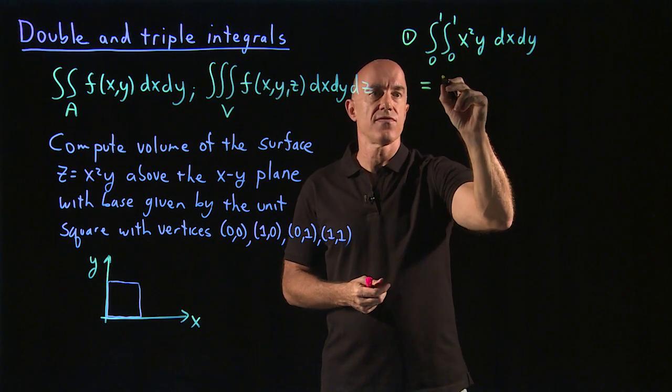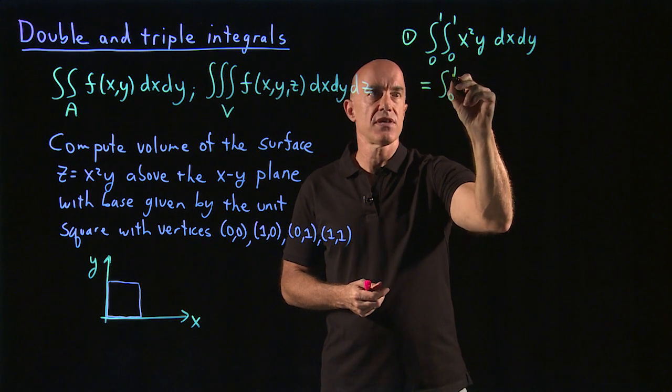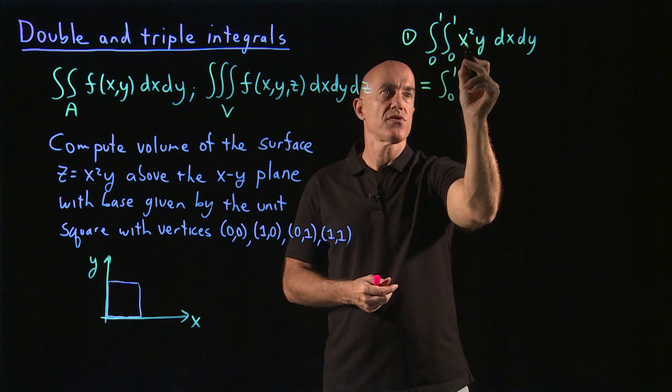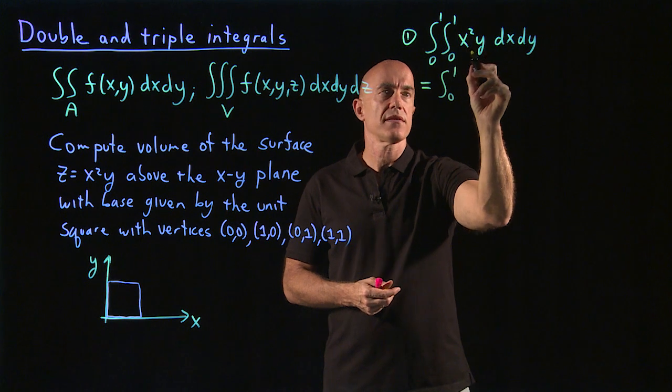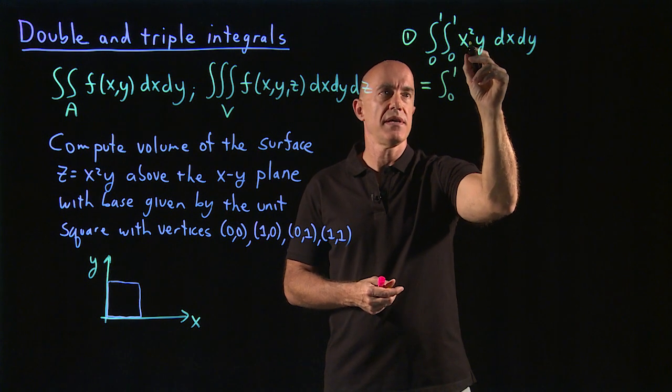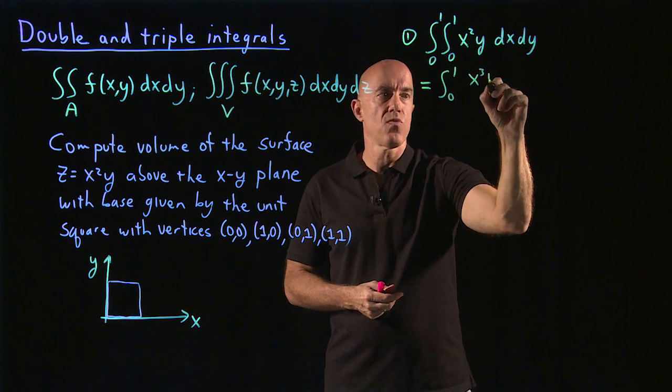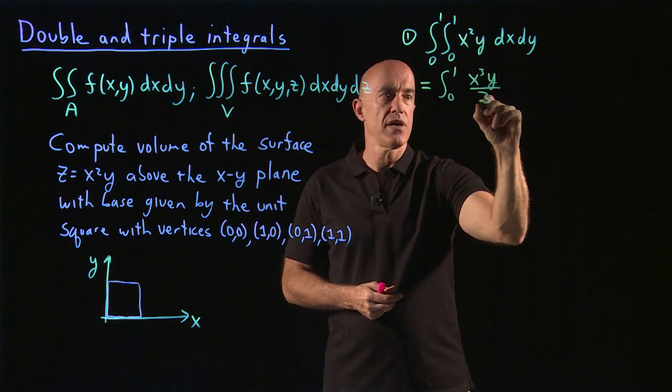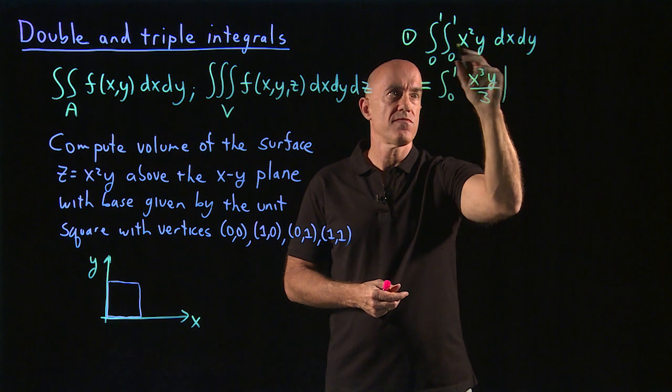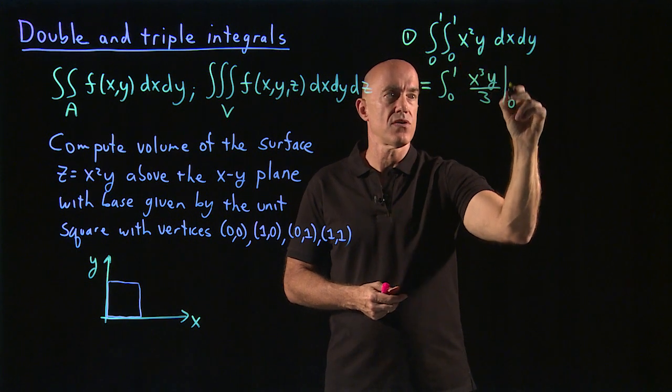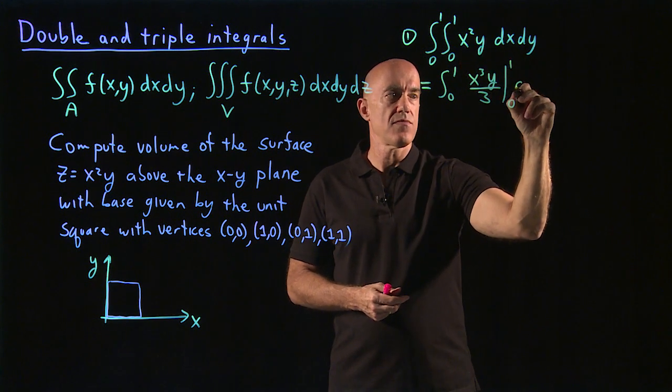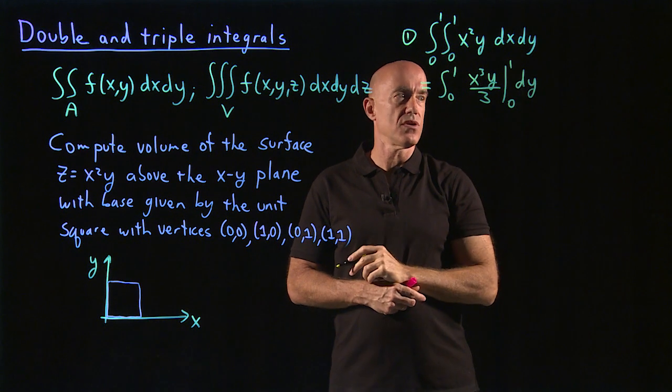So if we integrate this over x, we still have 0 to 1. And then we integrate x squared, keeping y fixed, will be x cubed over 3. So x cubed y over 3. And that will be as x goes from 0 to 1, and then we'll have a dy integral left.